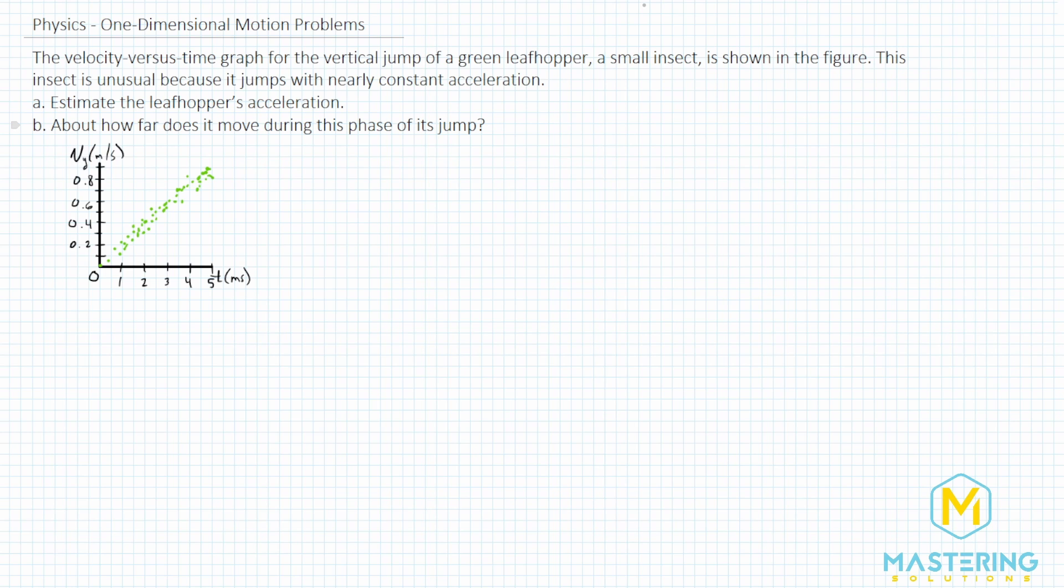Now they say that it's an interesting bug because it jumps with nearly constant acceleration. So you can see in the graph, it's essentially all just a straight line. So what we would be using for this is what's called a line of best fit. So we could go start right here and go pretty much straight through. Putting that line straight through, you can see it essentially approximates all of the points to give us the slope of the line.